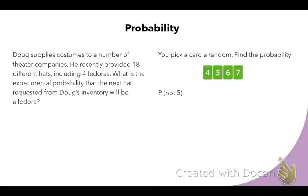The first one kind of threw me off a little bit, so I just want to clarify as we're reading this question. It says Doug supplies costumes to a number of theater companies. He recently provided 18 different hats including four fedoras. What is the experimental probability that the next hat requested from Doug's inventory will be a fedora? Let's refresh on the formula.